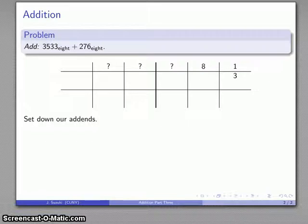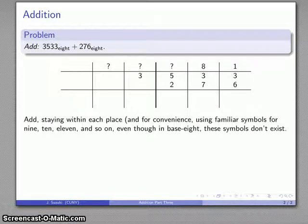I'll set down my addends. And I'll add, staying within each place. For convenience, I'll use my familiar symbols for the higher numbers, even though in base 8 these symbols don't really exist. It doesn't really matter the order that I add in, so I'll add from left to right. That's 3, 7, 10, and 9.